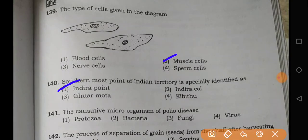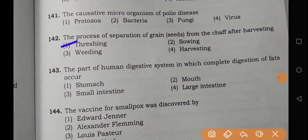Similarly, this is the indira point. And polio virus is here. Then here, threshing is the right one. Complete digestion happens in the small intestine, whether it is fat, carbohydrate, or protein, whatever - small intestine will be the answer. Edward Jenner is the right one.